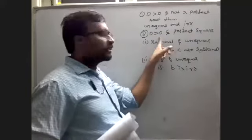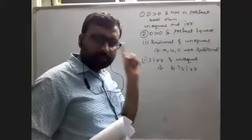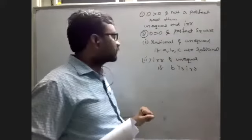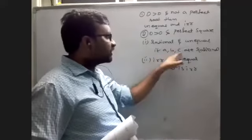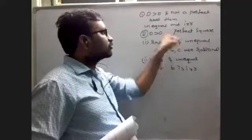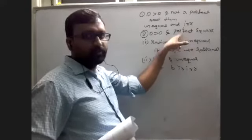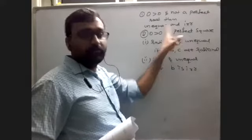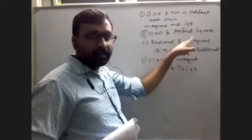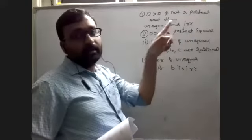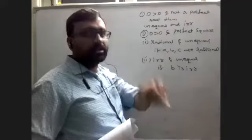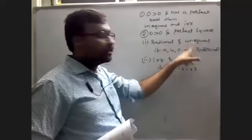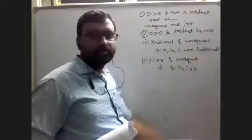Second, if delta is greater than 0 and a perfect square, there are two sub-conditions. If a, b, c are rational, then the nature of roots will be rational and unequal when delta is a perfect square.